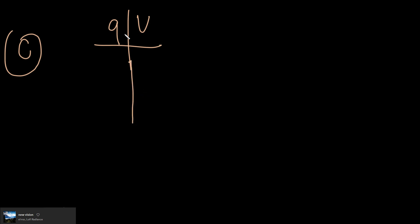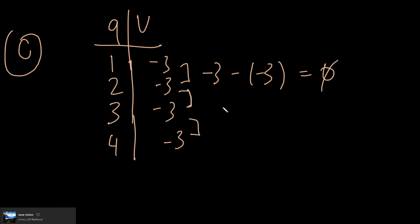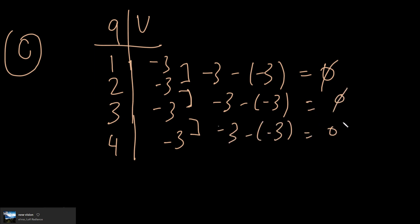Now option C. The values are: Q=1, V=-3; Q=2, V=-3; Q=3, V=-3; Q=4, V=-3. All the V values are the same, so negative three minus negative three equals zero each time. All my first differences are the same value — it doesn't matter if it's zero, one, two, or three. It's the same value, which means this is also a linear relationship.